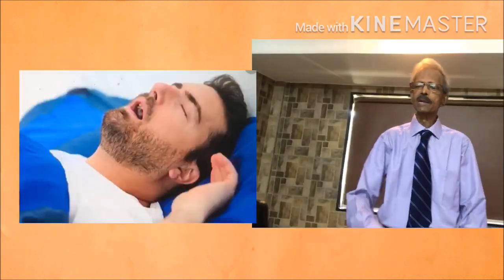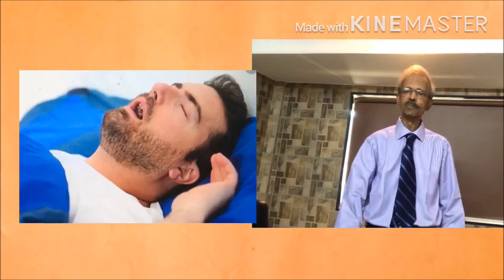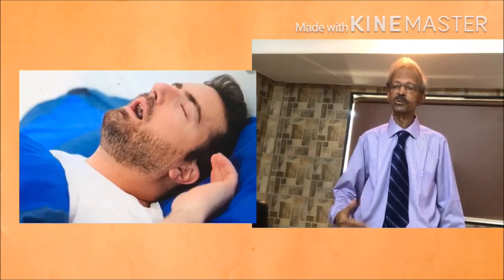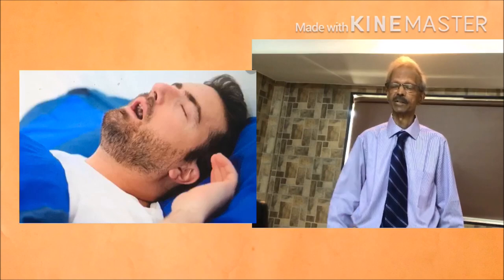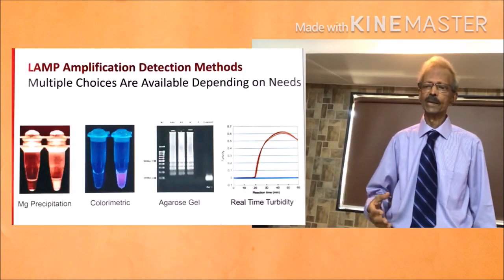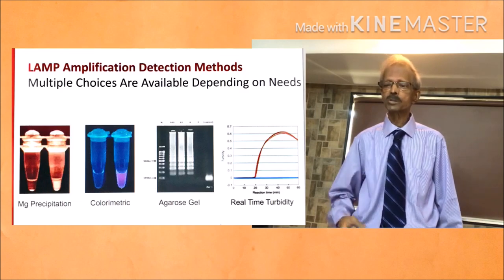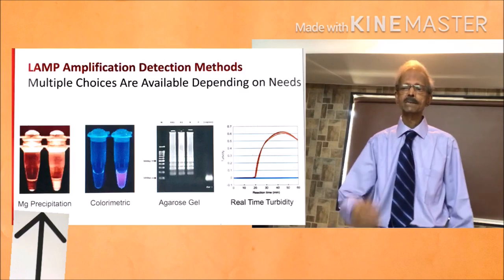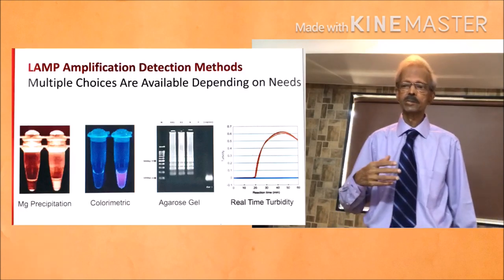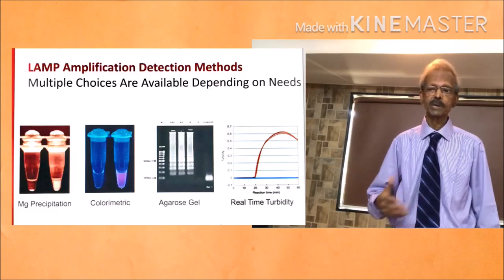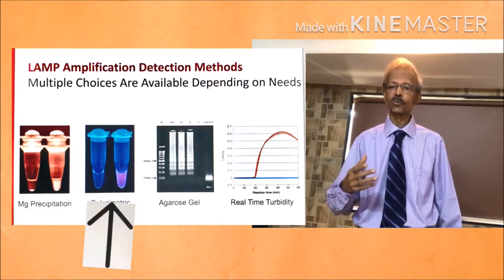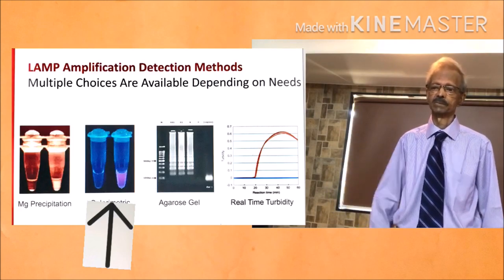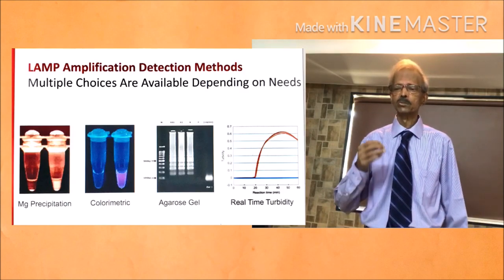It is important to note that this test can also be performed at the patient's bedside without using a spectrophotometer — the end result can be read by eye only. When magnesium pyrophosphate is used, a precipitate is formed when the test result is positive. When hydroxy naphthol blue is used, it results in a colour change from violet to blue, whereas calcein induces a change from orange to yellow-green.